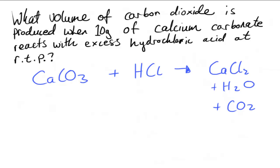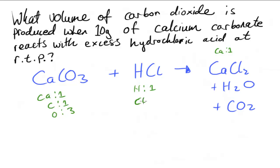Now I need to balance this equation. For calcium we have one on each side. For carbon we have one on each side. For oxygen we have three on the left side and three on the right side. For hydrogen we have one on the left, and for chlorine we have one on the left. On the right, we have two chlorines and two hydrogens, so the hydrogens and chlorines are not balanced.